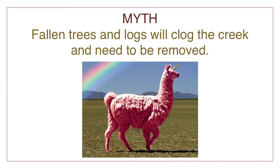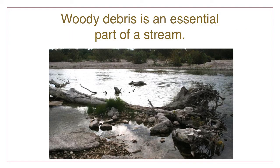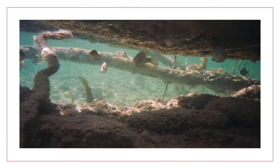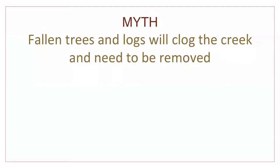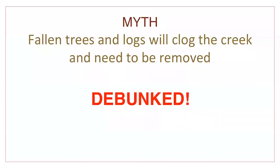People often think they are helping the river by cleaning up flood debris and removing fallen trees. But woody debris is an essential part of the stream. Over time, it will become buried in stream beds and banks, helping to stabilize sediments and hold banks and channels together, much like rebar in concrete. Anchored logs and trees also provide an ideal nursery for new riparian vegetation and good habitat for fish and other wildlife. Fallen trees and logs are part of the creek and should be left in place where they fall. Myth debunked.